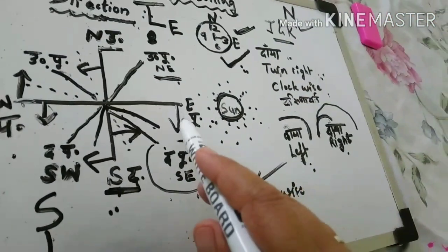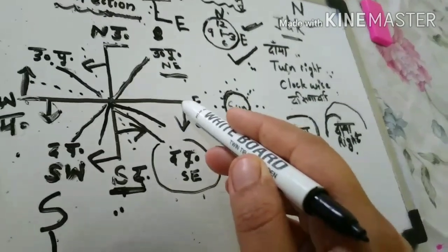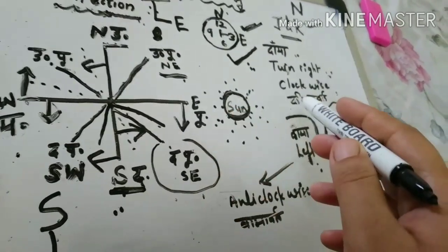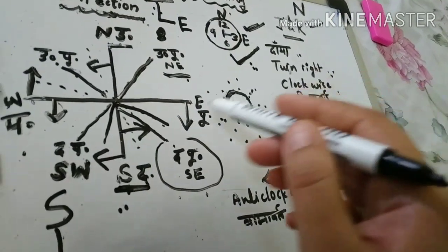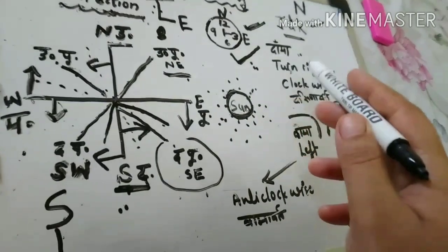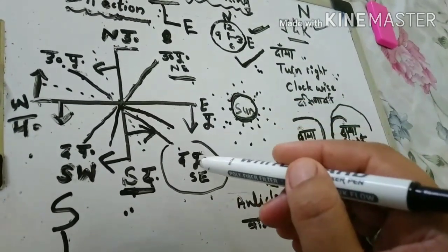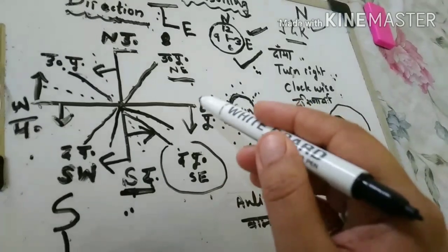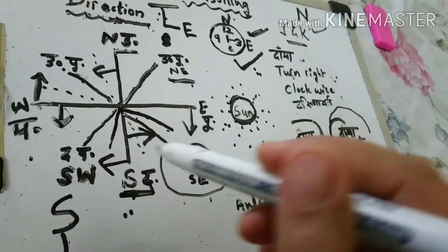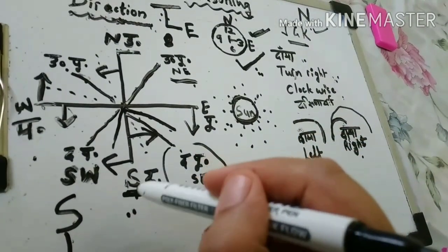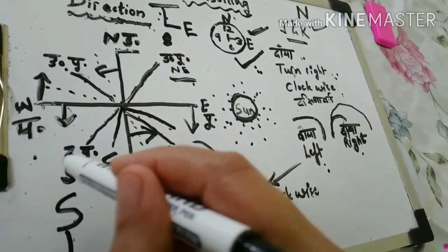If a person is standing facing east and turns clockwise or right - dakshinavart - he will move in this direction, as I'm showing with the arrow. If he is standing facing south and turns right, he will move in this direction.